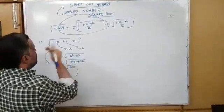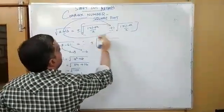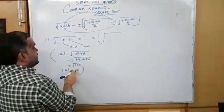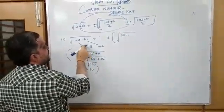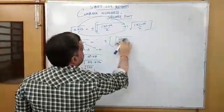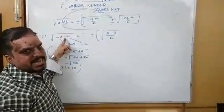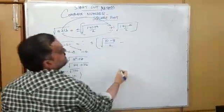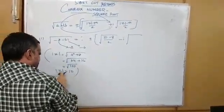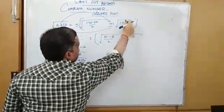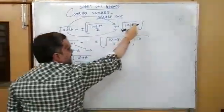Using the formula, we apply plus or minus square root of (|z| plus a) by 2. We know |z| is 10, and a is minus 8. So we put: (10 plus (minus 8)) by 2. Since the imaginary part in the question is negative, we apply minus i. Then for the second term, |z| minus a: since a is minus 8, minus of minus 8 gives us plus 8, so we take (10 plus 8) by 2.